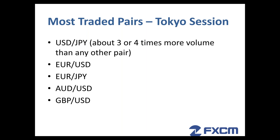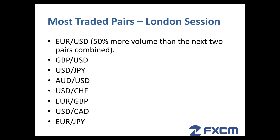That changes when the London session is open. There we'll see the euro/US dollar as the most traded pair — it's 50% more volume than the next two pairs combined, which is the pound/US dollar (called cable) and the US dollar/Japanese yen. Then we have the Australian dollar/US dollar, US dollar/Swiss franc, euro/pound, US dollar/Canadian dollar, and then euro/Japanese yen.